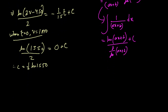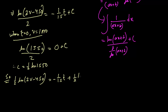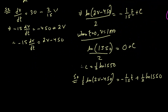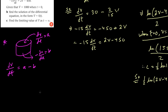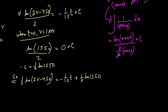Substituting t = 0 and V = 1000: ln(2×1000 − 450)/2 = ln(1550)/2 equals 0 + c, so c = (1/2)ln(1550). We can now write the particular solution: ln(2V−450)/2 = (−1/15)t + (1/2)ln(1550). To rearrange, we use the rule: if ln x = b, then x = e^b.